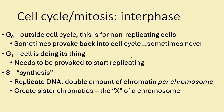Before S phase a chromosome looks like a single line. After S phase we see the X shape — that's the doubling of the chromatin per chromosome, so basically the chromosome doubles in its parts. We call each of these two lines of the X a sister chromatid.